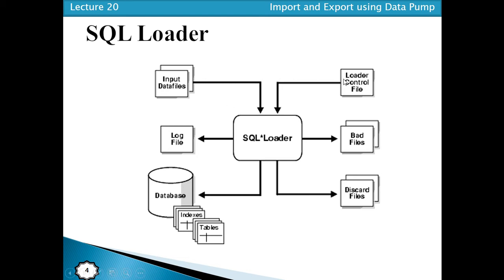So in control files, when loading data, we have three main commands: INSERT, TRUNCATE, and APPEND. INSERT is used whenever the table is empty. TRUNCATE is used when there is data in the table and we want to remove all of it. APPEND means we want to attach new data to the existing previous data.